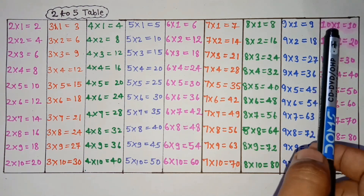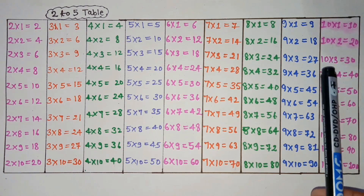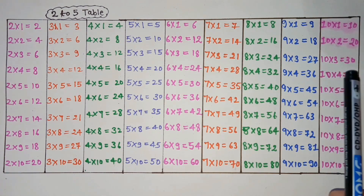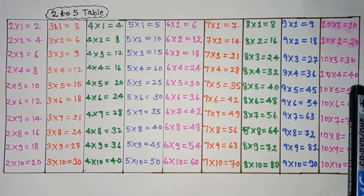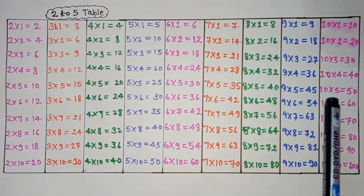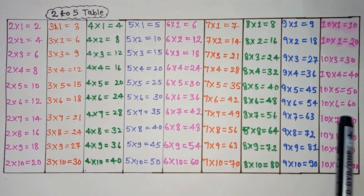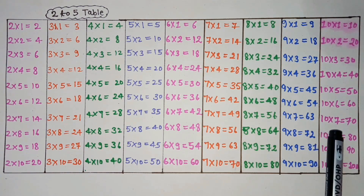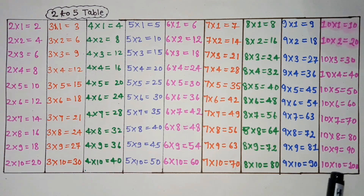10 ones are 10. 10 twos are 20. 10 threes are 30. 10 fours are 40. 10 fives are 50. 10 sixes are 60. 10 sevens are 70. 10 eights are 80. 10 nines are 90. 10 tens are 100.